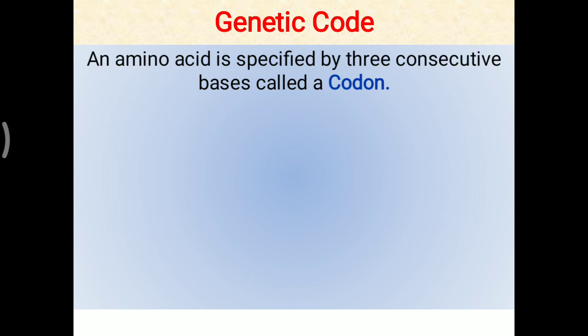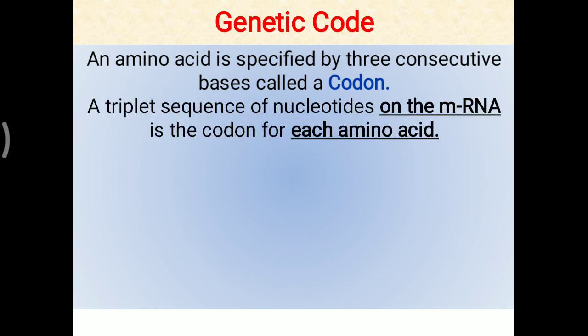Today's topic is about the genetic code. We have seen replication and transcription, but before translation you have to understand about genetic codons. An amino acid is specified by three consecutive nitrogenous bases called a codon. A triplet sequence of nucleotides on the mRNA is the codon. Genes are present on DNA, but the message or information passed on to the mRNA in a triplet nucleotide nitrogenous base is called a genetic codon.